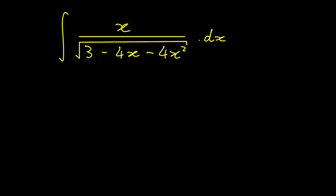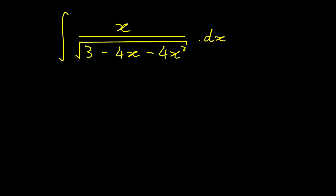Let's go through the solution. The first step is to take what's inside the square root and to complete the square. The first thing we're going to do is take out negative 4 as a common factor. So we have x squared plus x minus 3 over 4.